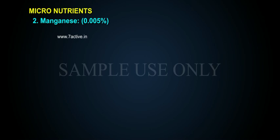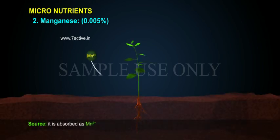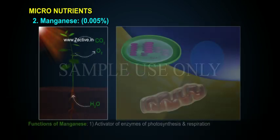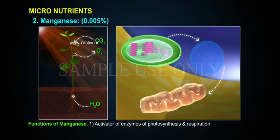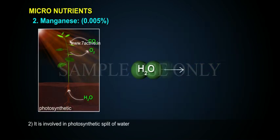Manganese makes up 0.005% and is absorbed as Mn2+. Functions of manganese: it is an activator of enzymes of photosynthesis and respiration, and it is involved in the photosynthetic split of water.